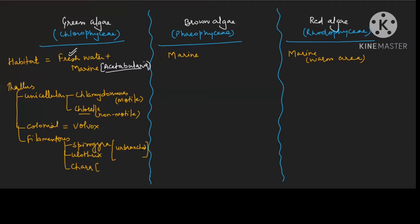Chara has branched filament. You may study it separately — it is also one important example of the green algae. So thallus organization for green algae, including Chara, should be clear now.